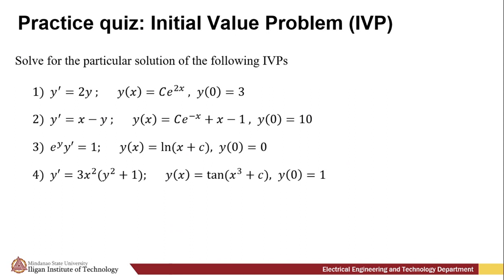For the practice quiz, solve for the particular solution of the following initial value problems. You are already given the differential equation, the general solution, and the initial value. Find the value of the arbitrary constant for each number. Pause this video and answer on your own — the answers will be discussed in a separate video.